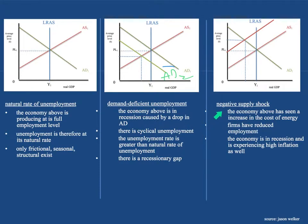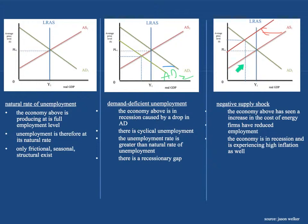What about a negative supply shock? That means there's going to be a drop in supply — maybe energy prices increase, a natural disaster, or a war creates short-term supply shocks. The economy has seen an increase in the cost of energy, so firms have reduced employment. The economy is in recession and experiencing high inflation. After the short-run aggregate supply curve shifts inward to AS2, there's a new equilibrium at a higher price level and lower real GDP. This recessionary gap is caused not by demand, but by a supply shock — causing both inflation and a drop in employment.